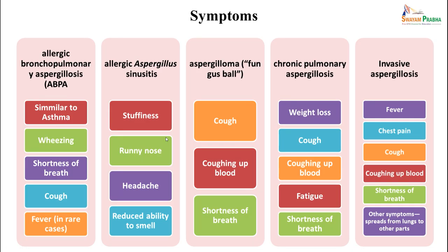Symptomatically: allergic pulmonary aspergillosis mainly resembles asthma — wheezing, shortness of breath, cough. Sinusitis presents with stuffiness, runny nose, and headache. Aspergilloma is usually asymptomatic or presents with cough or hemoptysis if blood vessels are invaded. Chronic pulmonary aspergillosis adds weight loss, fatigue, and hemoptysis. Invasive aspergillosis presents with fever, chest pain, hemoptysis, and can be very serious depending on the degree of invasion.